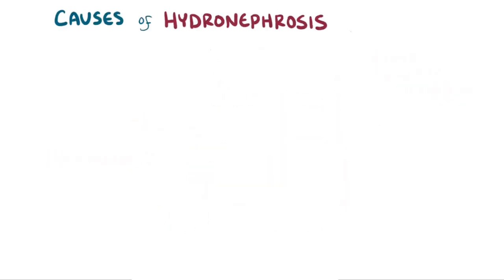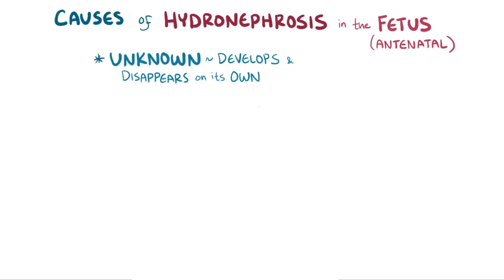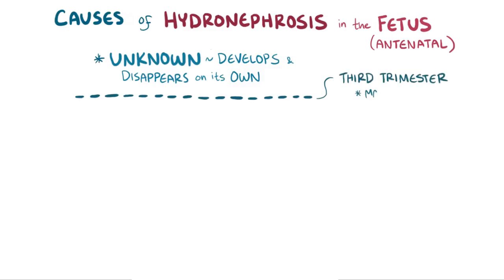The causes of hydronephrosis differ by age group. Hydronephrosis in the fetus is called antenatal hydronephrosis, and sometimes the cause here is unknown and it develops and disappears on its own — so this might be a variation of normal development. But if hydronephrosis progresses through fetal development into the third trimester, then there might be an actual underlying pathology.